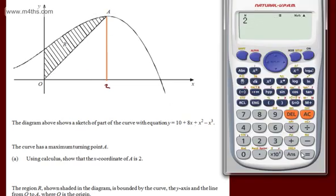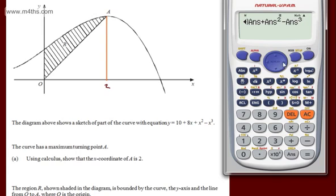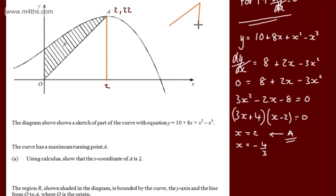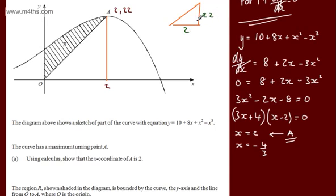Substituting x equals 2 into y equals 10 plus 8x plus x squared minus x cubed: 10 plus 16 plus 4 minus 8 gives the y-coordinate of 22. So A is the point (2, 22). The right-angled triangle has base 2 and perpendicular height 22, so its area is one half times 2 times 22 equals 22 units squared.